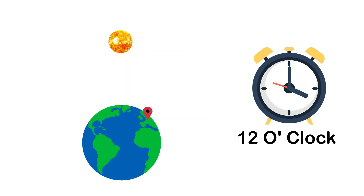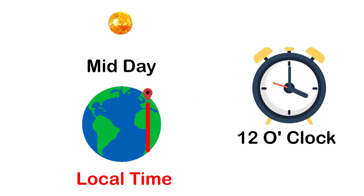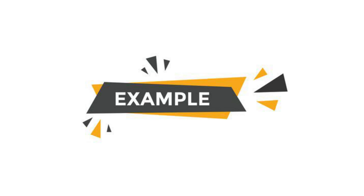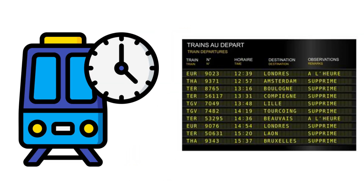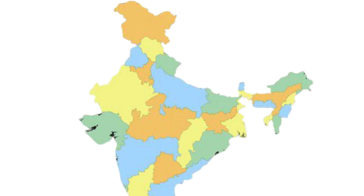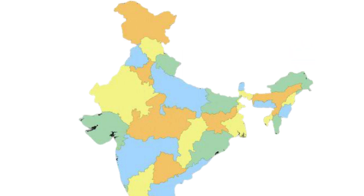At any place, a watch can be adjusted to read 12 o'clock when the sun is at the highest point in the sky — that is midday. The time shown by such a watch gives the local time for that place. All places on the same meridian of longitude have the same local time. The local time of places on different meridians will differ. For example, it would be difficult to prepare a timetable for trains which cross several longitudes. In India, there would be a difference of about one hour and 45 minutes in the local times of Dwarka in Gujarat and Dibrugarh in Assam.